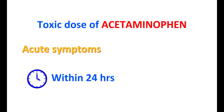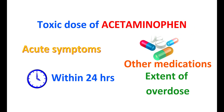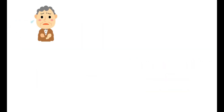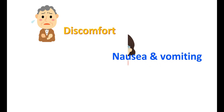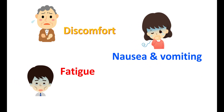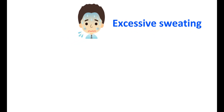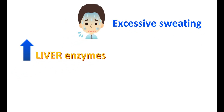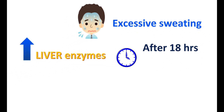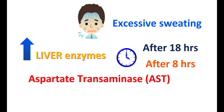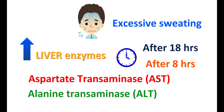A toxic dose of acetaminophen can develop acute symptoms within 24 hours, and the extent of overdose depends on which other medications are co-administered. Initially, patients may experience abdominal discomfort, nausea and vomiting, fatigue, and lack of energy. Excessive sweating can also be observed. Liver enzymes are elevated after 18 hours, though in some people elevation can occur as early as 8 hours. The liver enzymes aspartate transaminase (AST) and alanine transaminase (ALT) are elevated, indicating liver injury.